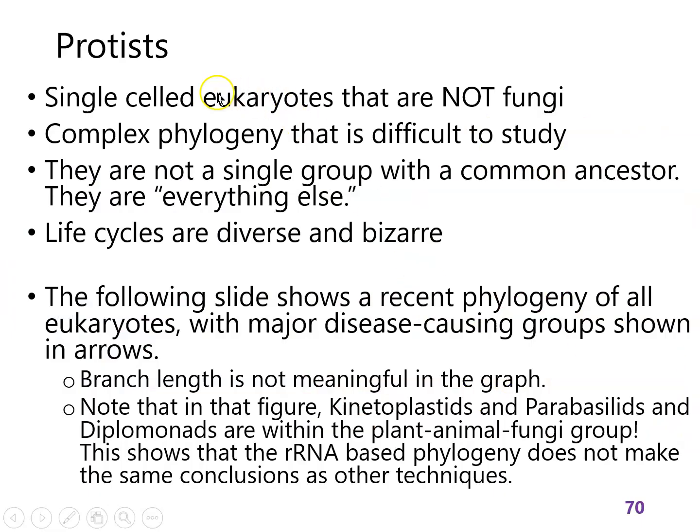Protists are single celled eukaryotes and their phylogeny is difficult to study. They are not a single group that has a common ancestor. They are a classification of everything that is not fungal — every single celled thing that is not fungal. On the following slide, we're going to see another phylogenetic tree, and what you'll see is some of the same groups as the previous slide, but the phylogeny is different.